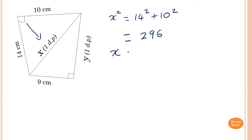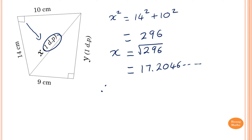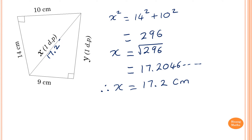Therefore x must equal the square root of 296, which is 17.2046 and so on, but correct to one decimal place, x is equal to 17.2 centimeters.